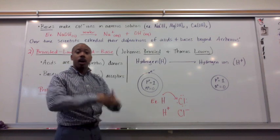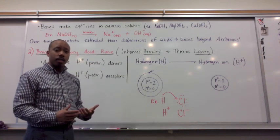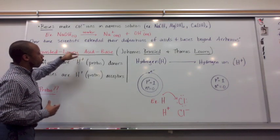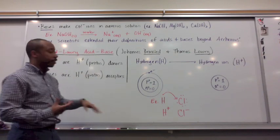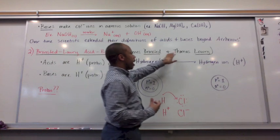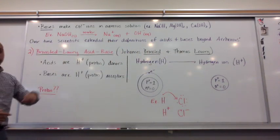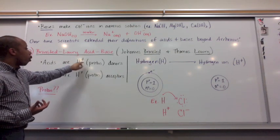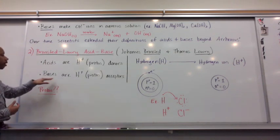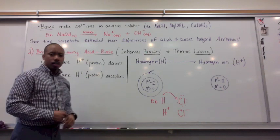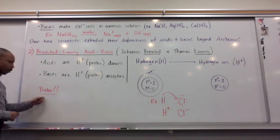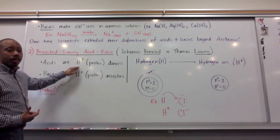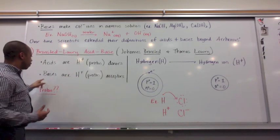Over time, scientists extended definitions of acids and bases beyond Arrhenius, bringing us to our second definition: the Bronsted-Lowry acid and base definition, from Johannes Bronsted and Thomas Lowry. They said that acids are H-plus or proton donors, and bases are H-plus or proton acceptors. You might ask — protons? Well, H-plus is essentially just a proton. Acids are H-plus donors; bases are H-plus acceptors.